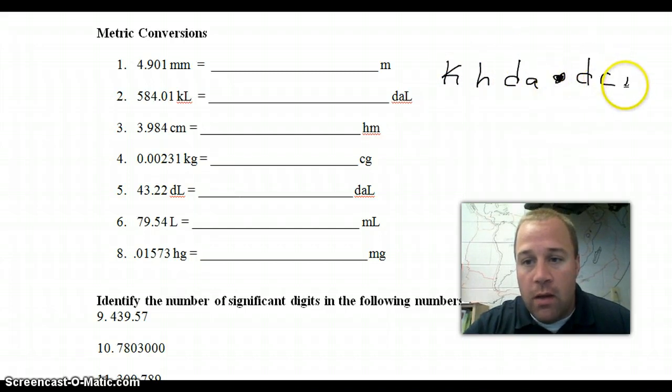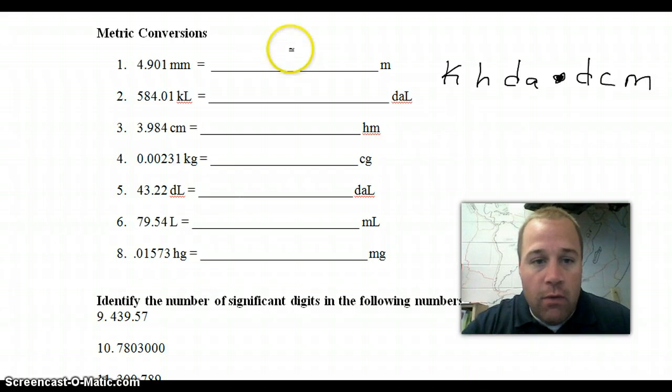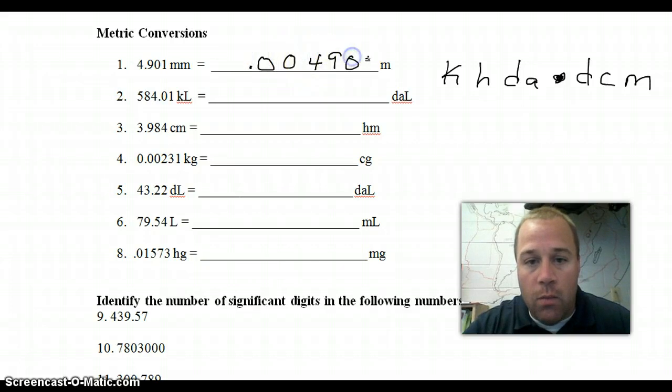D C M and we're just going to move the decimal point based on this. So first one going from 4.90 millimeters to meters. Millimeters when we look over on the thing is M. Meters would be the dot. So we're going 3 to the left. So our answer going decimal point 3 to the left should be 0.004901.